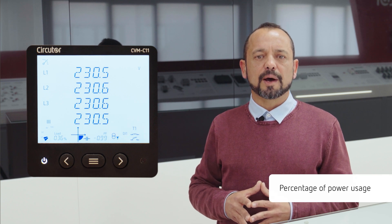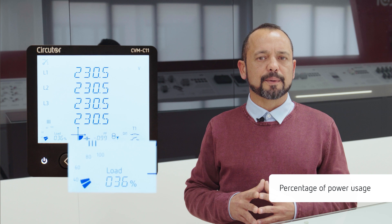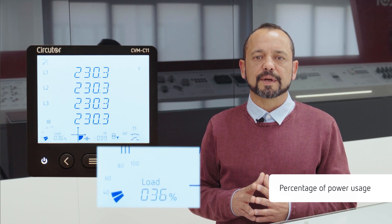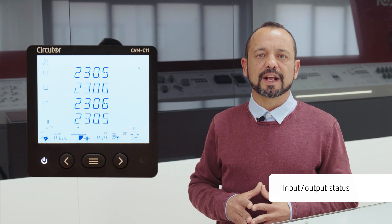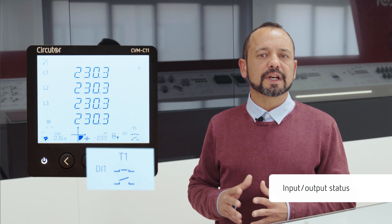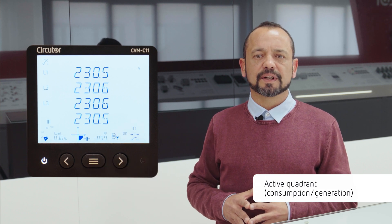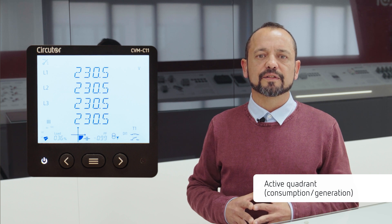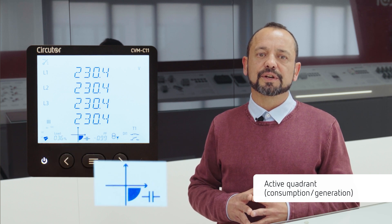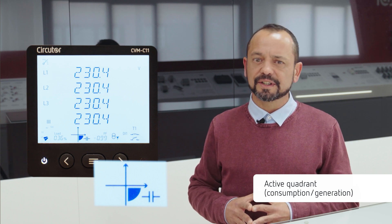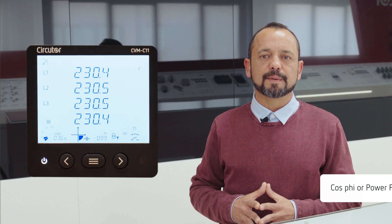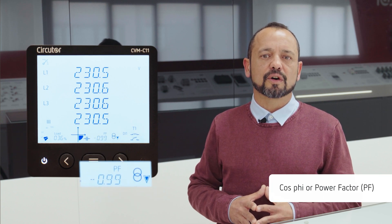The main screen shows a pie chart of the total theoretical active power, according to the configuration of the transformation ratio, in order to know what percentage of power is being requested at any moment. In addition, we can see icons showing the digital or relay inputs and outputs status, to quickly identify which output or input is activated, as well as indications of the active quadrant — which shows whether consumption or generation is inductive or capacitive — and the numerical value of the power factor or cost fee.